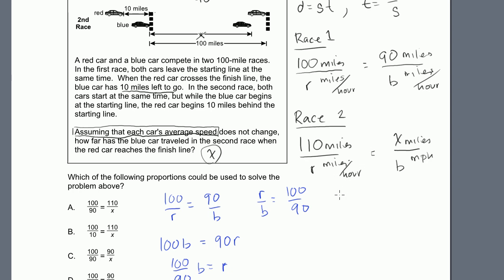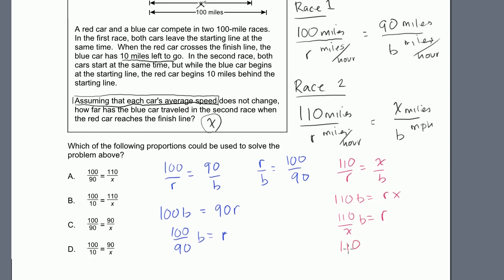From race two, cross-multiplying 110/r = x/b gives 110b = rx. Dividing both sides by x then by b gives 110/x = r/b. The first race already told us r/b = 100/90, so we substitute: 110/x = 100/90.